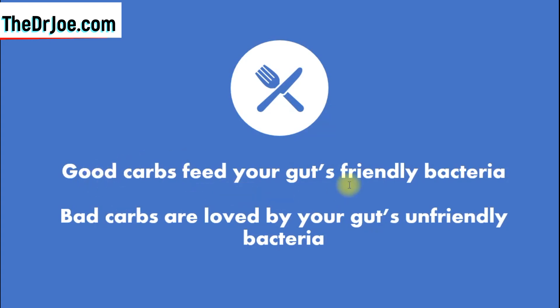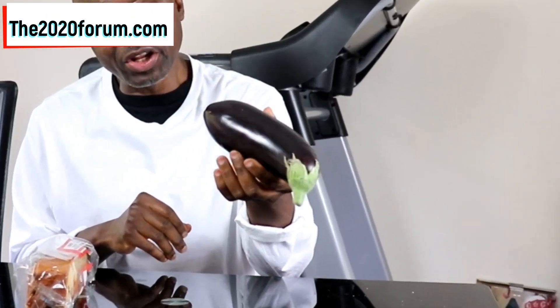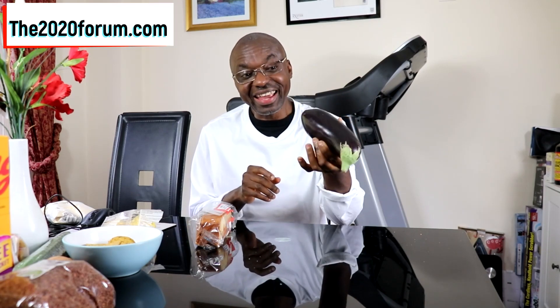Good carbs feed your gut-friendly bacteria — your gut-friendly bacteria love good carbs. This is an eggplant, or aubergine depending on where you live — this is a good carb, it is anti-inflammatory, and your gut-friendly bacteria love it. Compared to this cake: your gut-friendly bacteria do not thrive on this. This is food for your gut-unfriendly pathogenic bacteria — the disease-causing bacteria will love this cake — and what that means is this cake is inflammatory. Eggplant: good carb. Cake: bad carb.